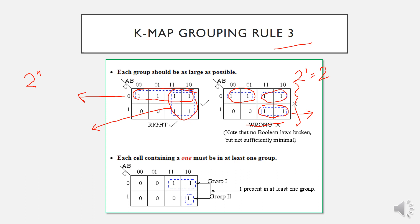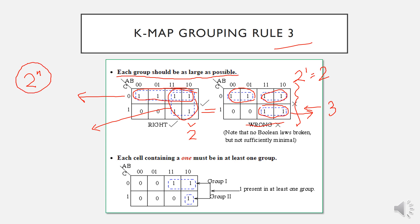The larger the group, the more simplified the resulting expression. Comparing these two grouping approaches: with larger groups we get only two terms, whereas with smaller groups of size two we get three terms. I will explain this with examples later, but the key point is to group as large as possible following the two-to-the-power-of-n size rule.